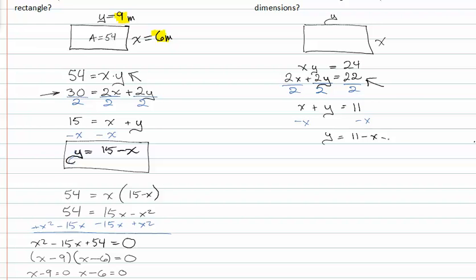Now that I've isolated or solved for y, I can plug that back into the area equation. So instead of y here, I'm going to plug in eleven minus x. So x times eleven minus x is equal to twenty-four.